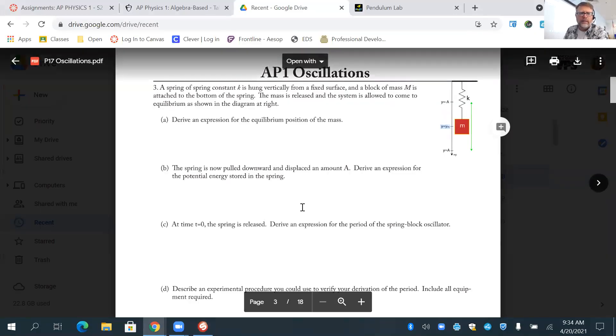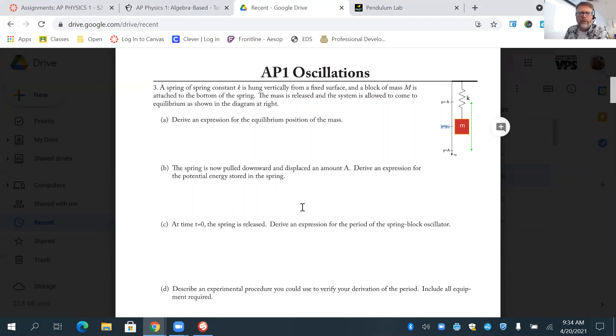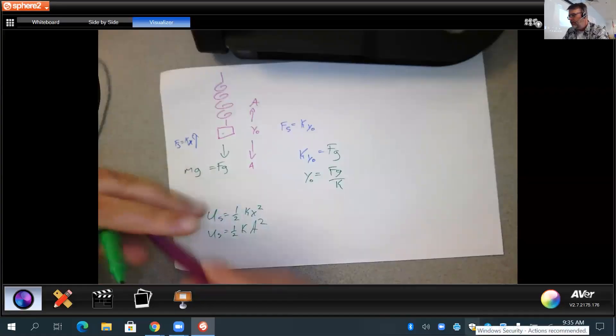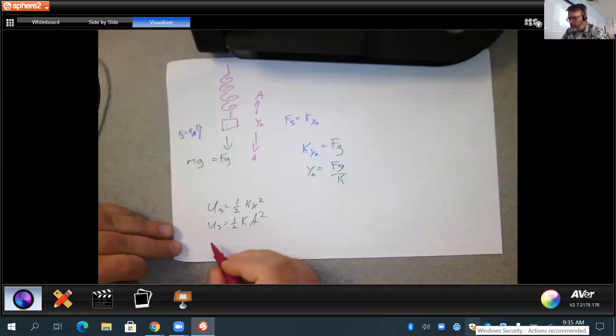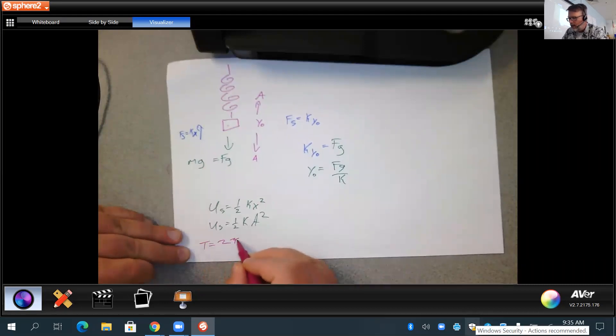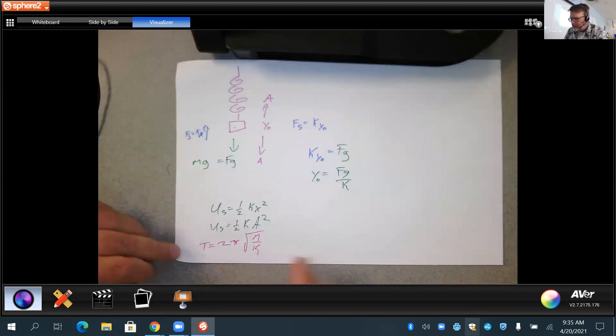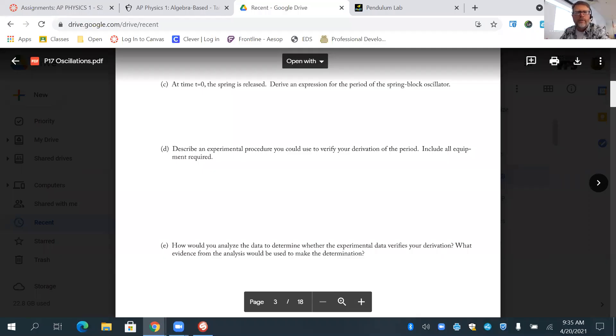Let's keep going. All right, next up at time zero, the spring was released. Drive an expression for the period of the spring block oscillator. So again, we're using the word derived here rather superficially, so we're just going to equal 2 pi square root of M over K. So they gave us these points and that's how we can derive it.